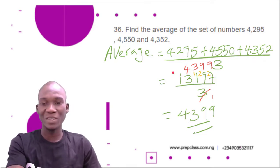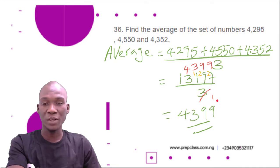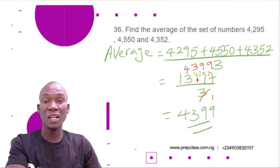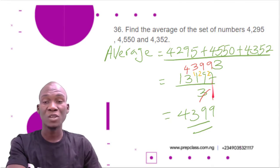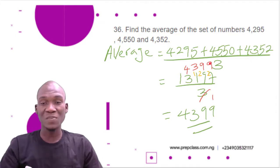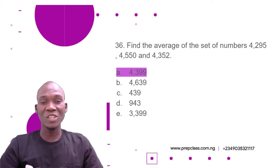Now we divide 13,197 by 3. 3 into 13 is 4 remainder 1; the 1 joins the next digit to give 11. 3 into 11 is 3 remainder 2; 2 joins 9 to give 29. 3 into 29 is 9 remainder 2; 2 joins 7 to give 27. 3 into 27 is 9. So 13,197 divided by 3 is 4,399, which is the average.